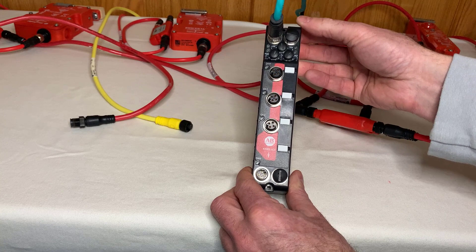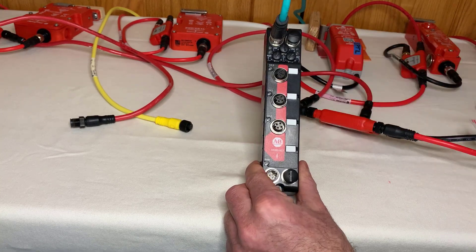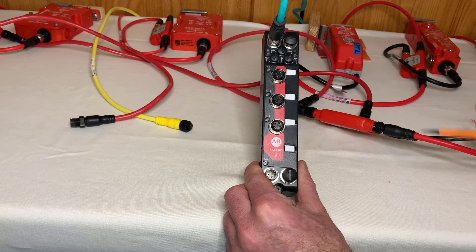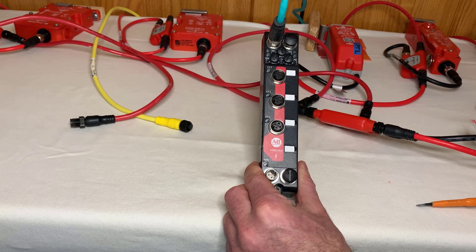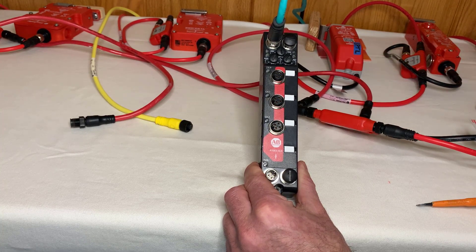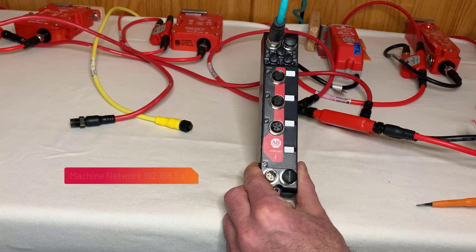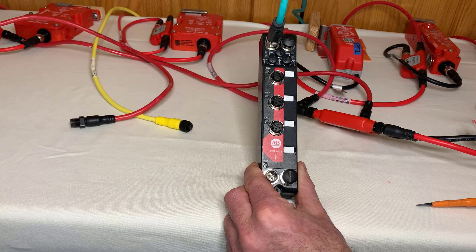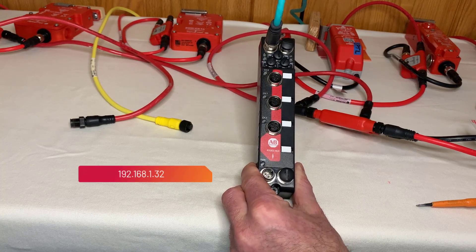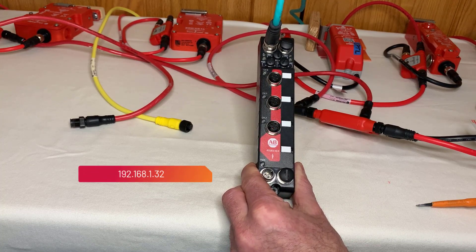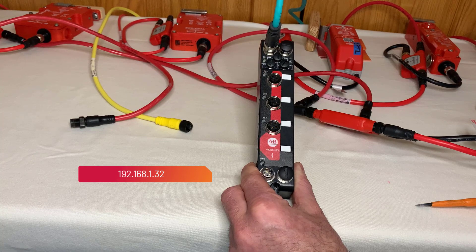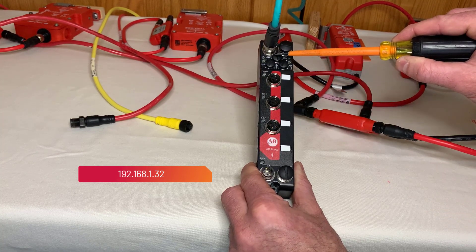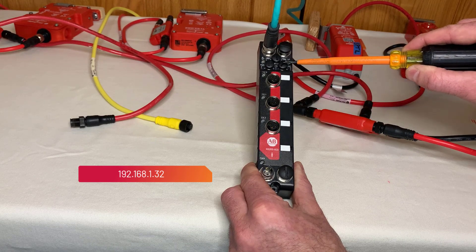Underneath the Ethernet ports are three small covers where the IP address switches are located. Though the device ships DHCP boot-P enabled, many users choose to use a 192.168.1 machine network. This module has been set to the network address 192.168.1.32 by setting the hundreds to 0, tens to 3, and ones to 2.